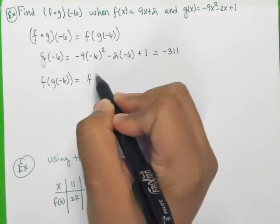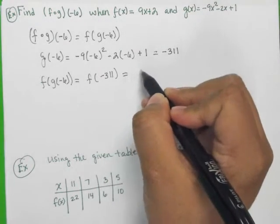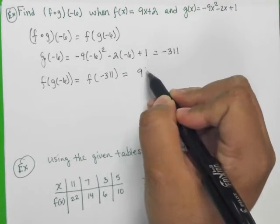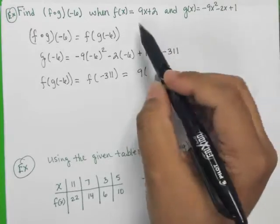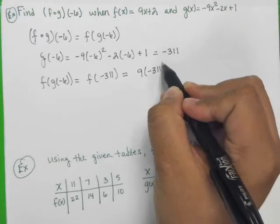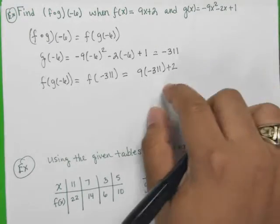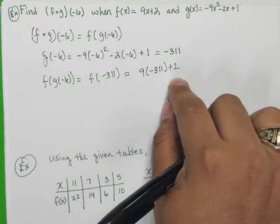Well, this is F of negative 311. So we're going to plug in, I'm sorry, not 9, but negative 311 into this function F. 9 times negative 311 plus 2. All right. And I'll let you work that one out as well.